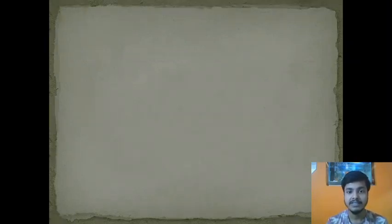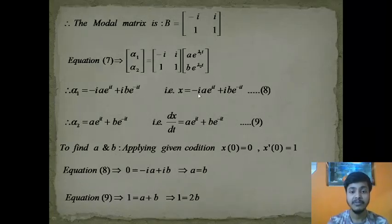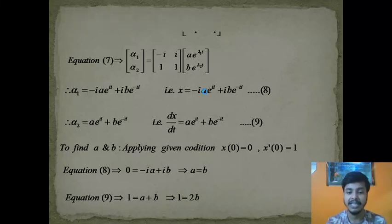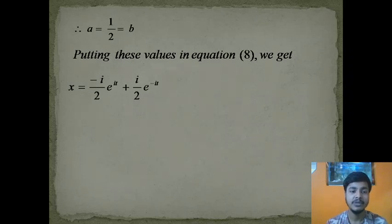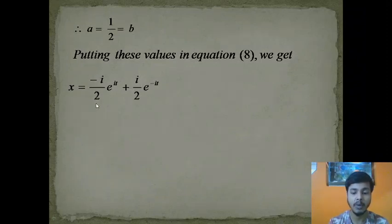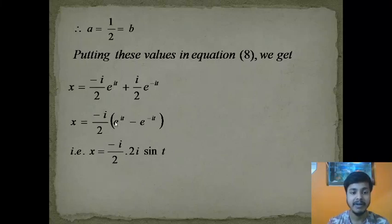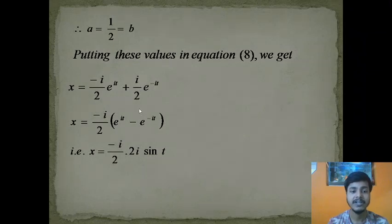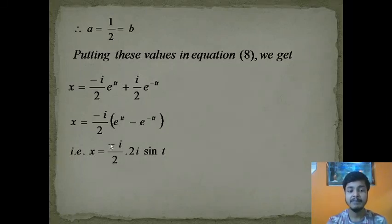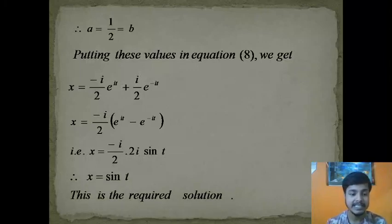Substituting a = b = 1/2 into equation 8: x = −(i/2)e^(it) + (i/2)e^(−it). Taking −i/2 common gives x = (−i/2)[e^(it) − e^(−it)]. Recalling the Euler formula, e^(it) − e^(−it) = 2i·sin(t). So x = (−i/2)(2i·sin t) = (−i·i)·sin t = sin t, since i·i = −1. Therefore the final answer is x = sin t.